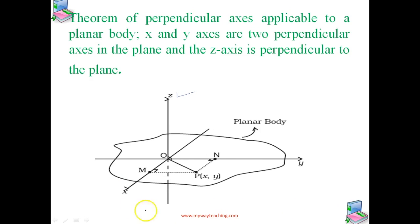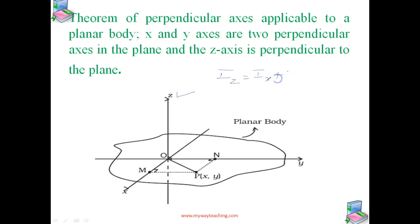One axis is along x and the other along y. So we can say the moment of inertia along the z axis is equal to the moment of inertia along the x axis plus the moment of inertia along the y axis — that is Iz = Ix + Iy. This is what the theorem of perpendicular axis states.